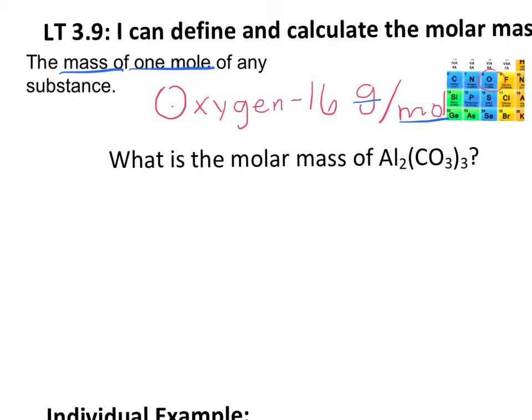Now, when calculating the molar mass of a compound, it's pretty simple. All we need to do is add up the total molar mass of each element. So in this compound, Al2(CO3)3, we have three elements.